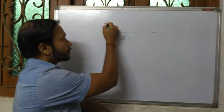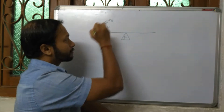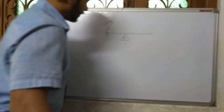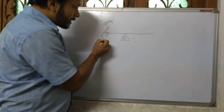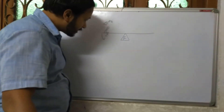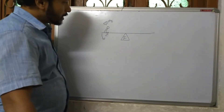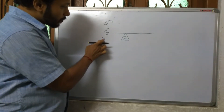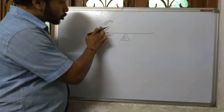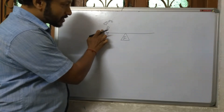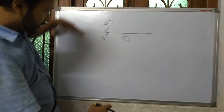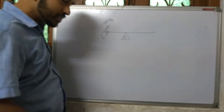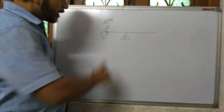Now if a boy is sitting here, and the mass of this boy is 50 kg, then for this boy the seesaw will tilt in this direction — anticlockwise. So this boy will experience an anticlockwise torque. This direction is anticlockwise.